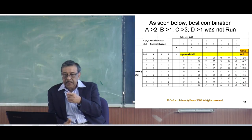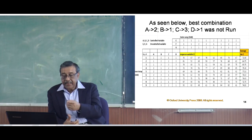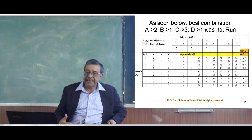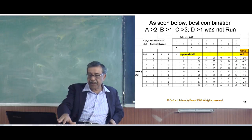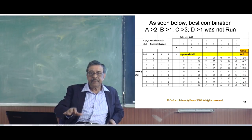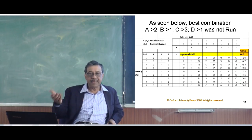You can see in my original experiment that 2, 1, 3, 1 — that is a=2, b=1, c=3 and d=1 — was not run and was not part of the original experiment I did. Yet this experiment tells me that this particular combination will give me the best possible result and maximize the output.